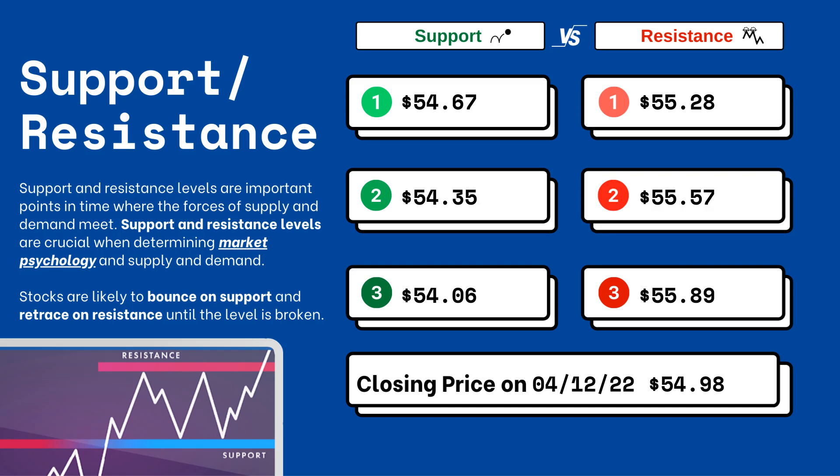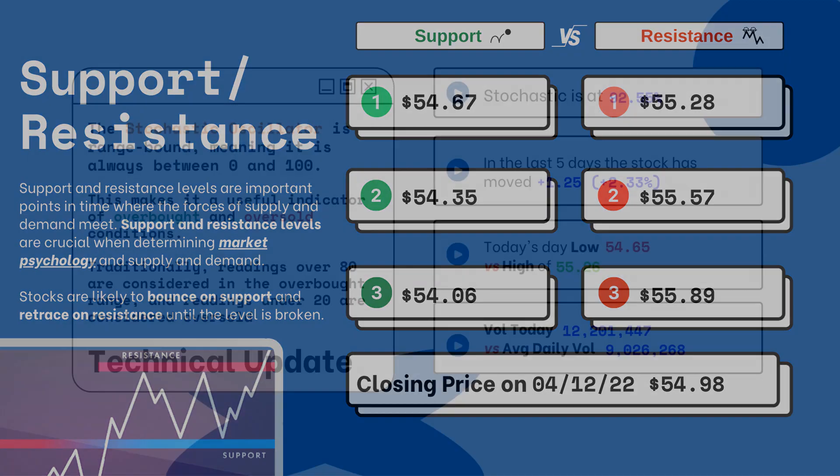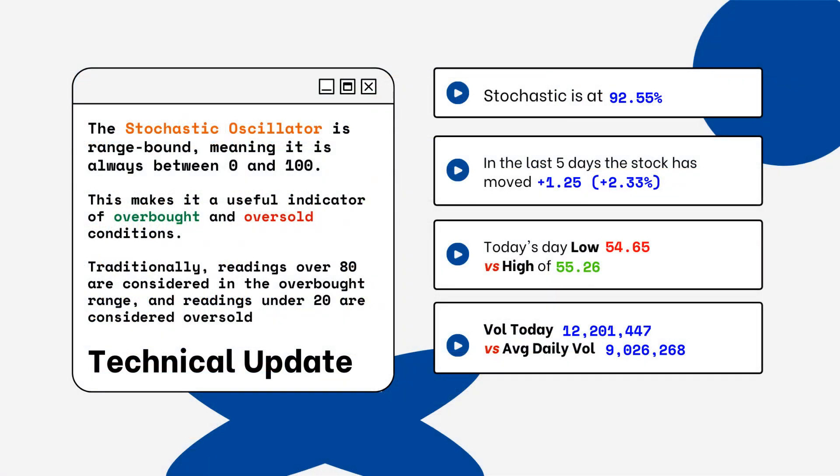These are areas that you want to watch when looking at this particular stock. Stocks typically bounce at support levels and resist at resistance levels, meaning they'll retrace from that top level. You can see on the right side where the stochastic level is on this particular stock. This is a technical update looking for overbought and oversold conditions — readings over 80% are considered overbought.